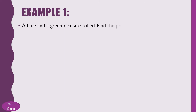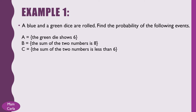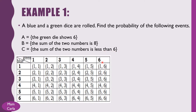Let us deal with the first problem. A blue and a green dice are rolled. Find the probability of the following events: Event A — the green dice shows 6; Event B — the sum of two numbers is 8; Event C — the sum of two numbers is less than 6. I'll be listing down the possible outcomes of this experiment. Counting the number of outcomes, the cardinality of the sample space is 36.